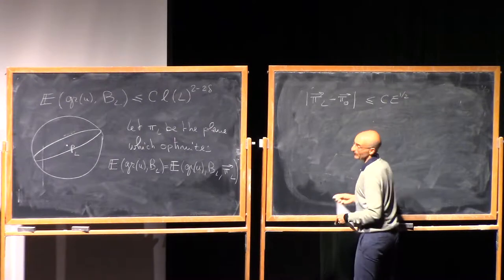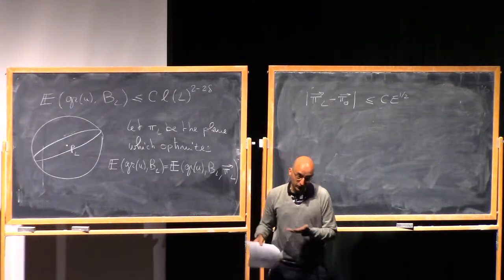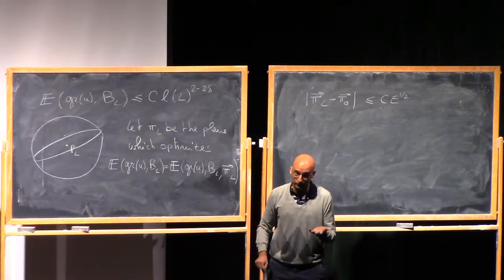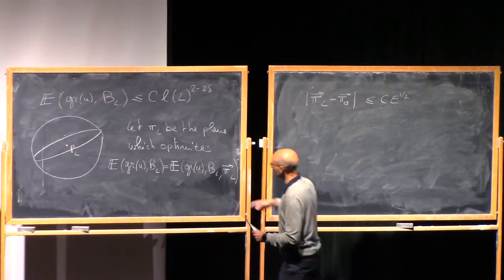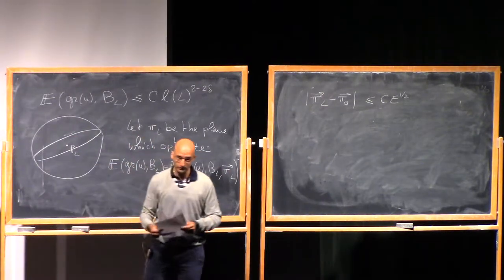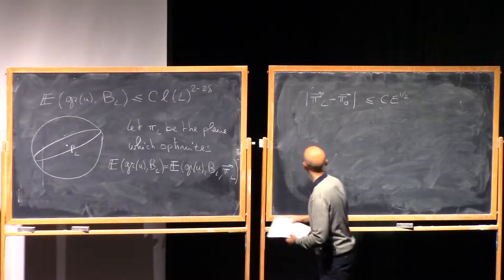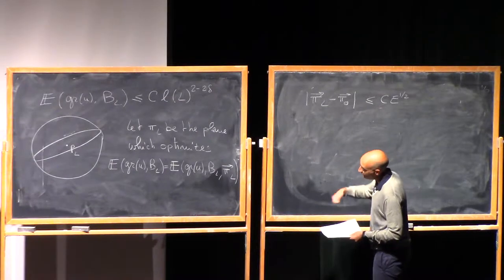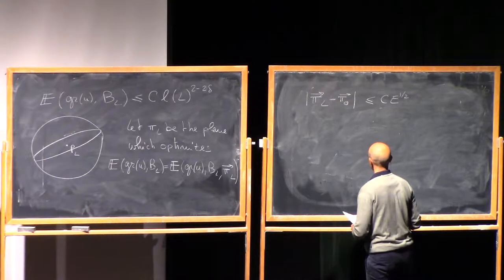That is because the C^0 norm of Du is less or equal than E^{1/2}, and this optimal plane is essentially an average of the function Du over the corresponding scale. Otherwise you can prove it directly from De Giorgi's excess decay, and that is done in the lecture notes.